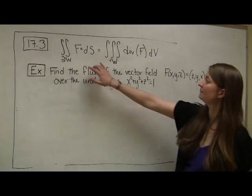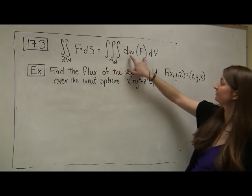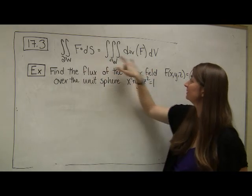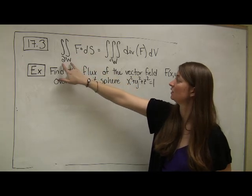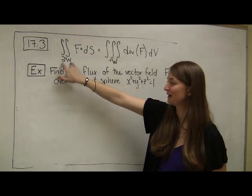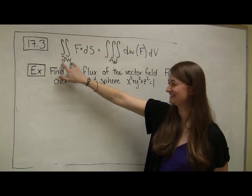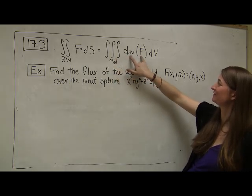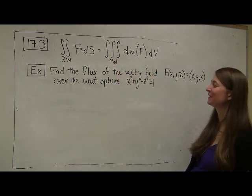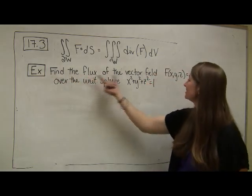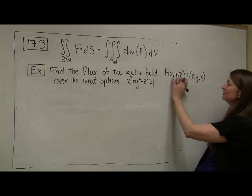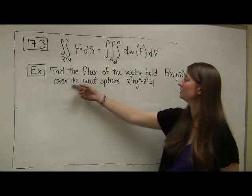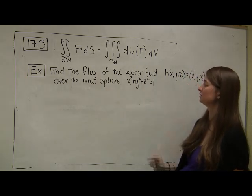So, let's look at an example. Up here I've written out the brief equation that we would use to represent the divergence theorem, the fact that the surface integral along the boundary of the closed boundary that is a surface is equal to the triple integral over the volume where my function is the divergence of f. In this example, we want to find the flux of the vector field given by (z,y,x) and we want to find the flux over the unit sphere x squared plus y squared plus z squared equals one.